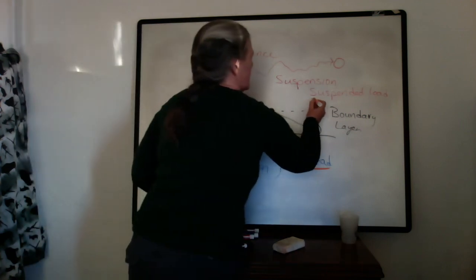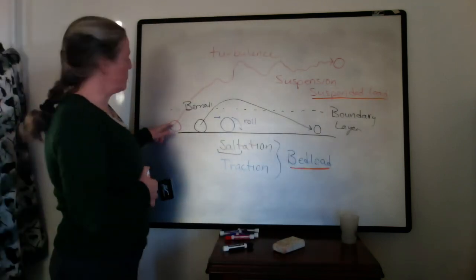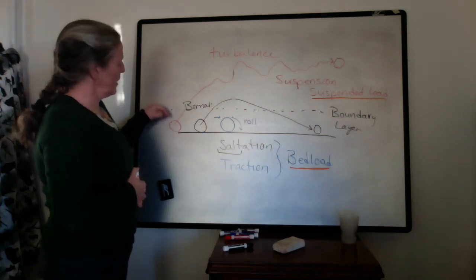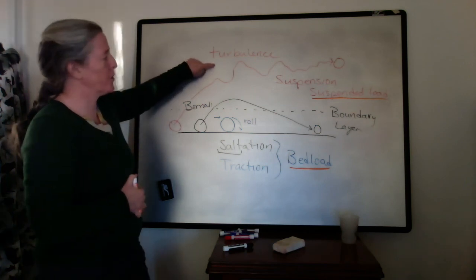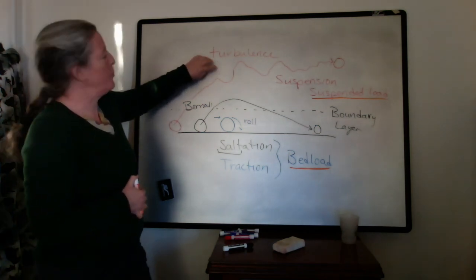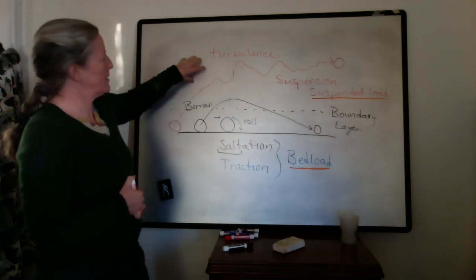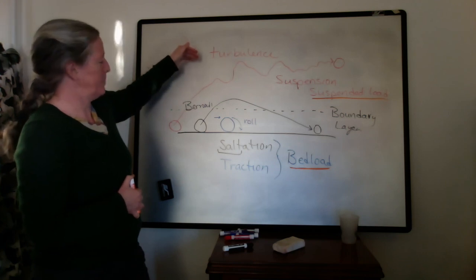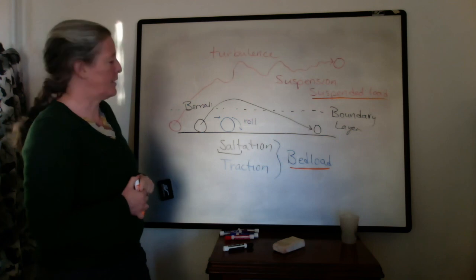So as you can imagine, or as you know, smaller grains with smaller mass have a lower, smaller force pushing them downwards. So it's much easier for smaller grains to be incorporated as suspension sediment transport in the flow because gravity is lower, and they're more susceptible to that turbulent flow.